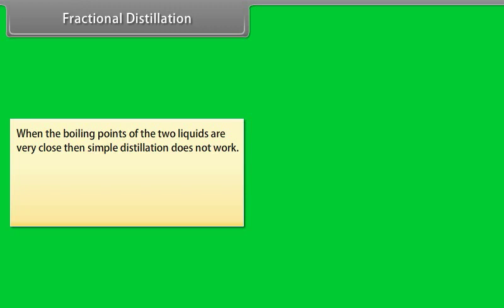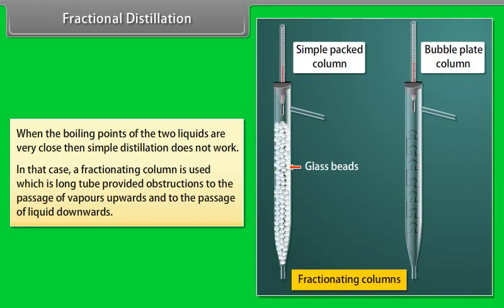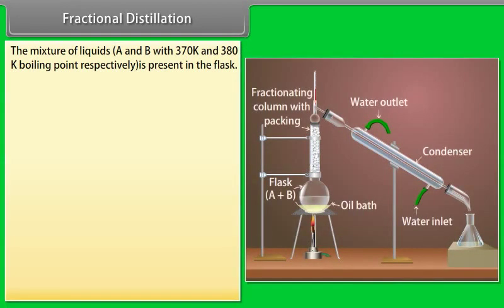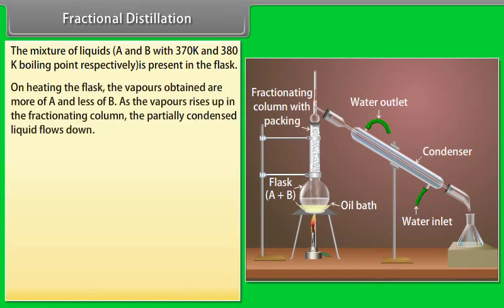Fractional distillation: When the boiling points of two liquids are very close, simple distillation does not work. In that case, a fractionating column is used, which is a long tube that provides obstructions to the passage of vapors upwards and liquid downwards. For example, a mixture of liquids A and B with boiling points 370 K and 380 K respectively is present in the flask. On heating, the vapors obtained are more of A and less of B.